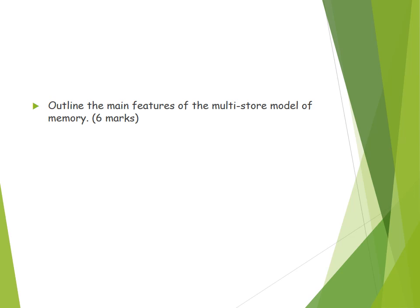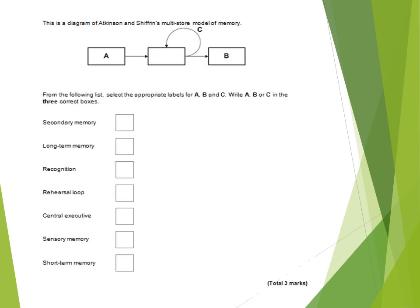You might get a question like: 'Outline the main features of the multi-store model' for six marks. This is simply the description of the model — no need to talk about evaluation, just the outline. You could also get a diagram where you have to fill in the correct parts: A is sensory memory or sensory register, B is long-term memory, and C is the rehearsal loop or maintenance rehearsal.